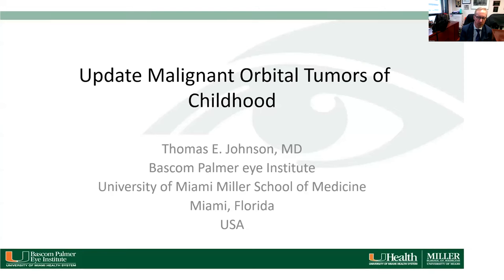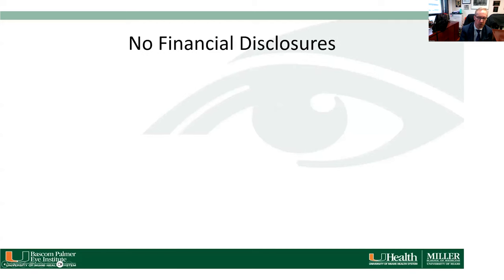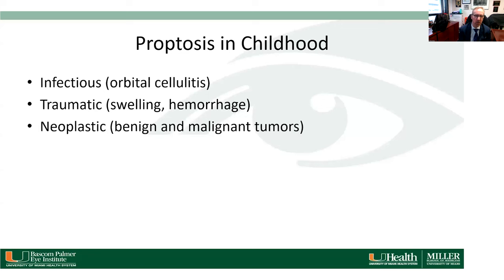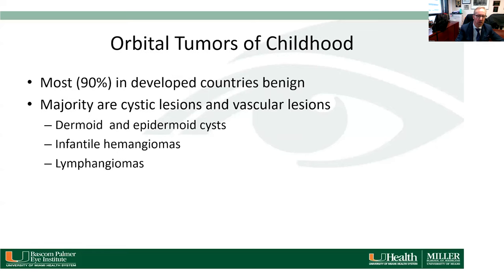Good morning, this is Dr. Tom Johnson at Bascom Palmer Institute. I'm going to be talking about an update on malignant orbital tumors of childhood. I have no financial disclosures. Proptosis in childhood is something that's very concerning — it can be due to infectious causes like orbital cellulitis, traumatic injuries, and neoplastic processes such as benign and malignant tumors. We're going to concentrate on the malignant tumors.